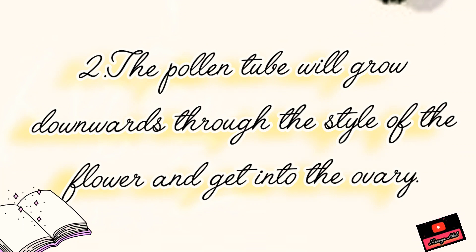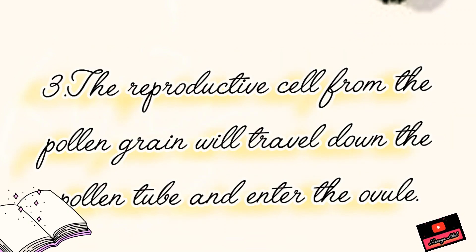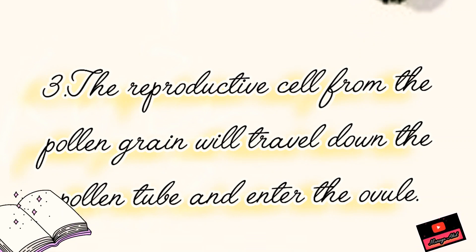Now write the second point: the pollen tube will grow downwards through the style of the flower and get into the ovary. Now write the third point: the reproductive cell from the pollen grain will travel down the pollen tube and enter the ovule.